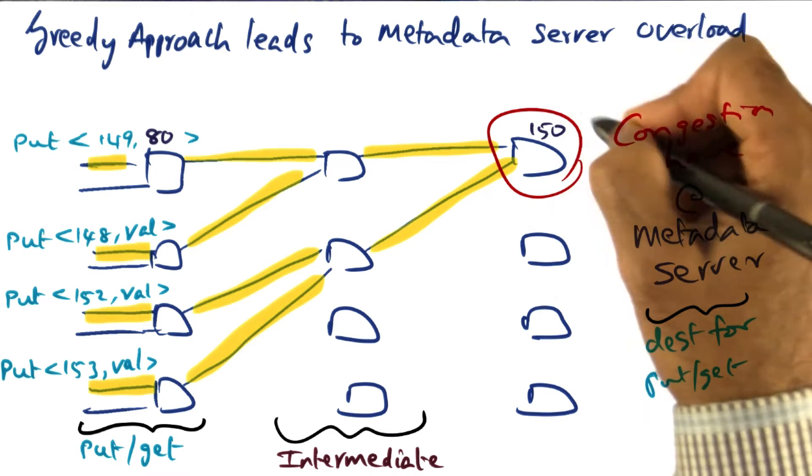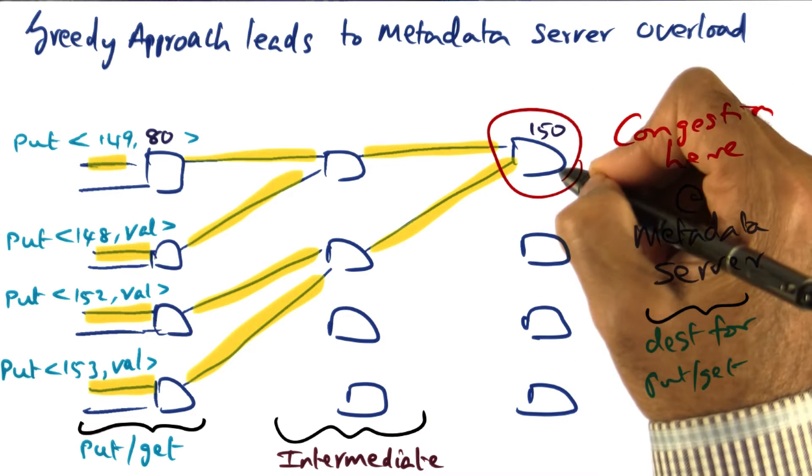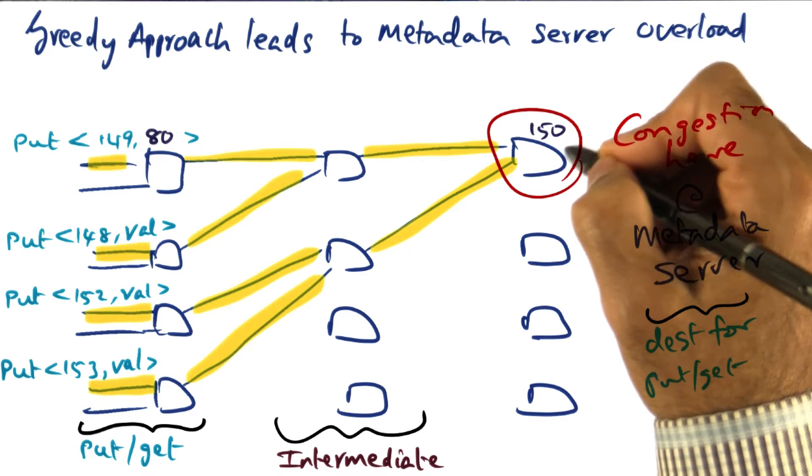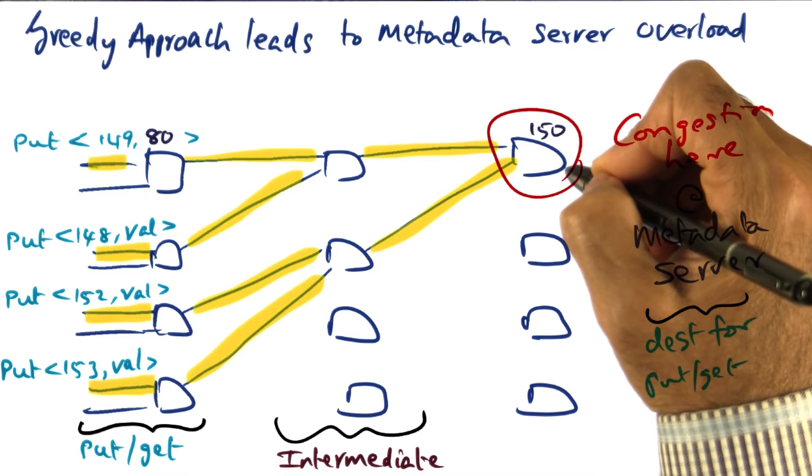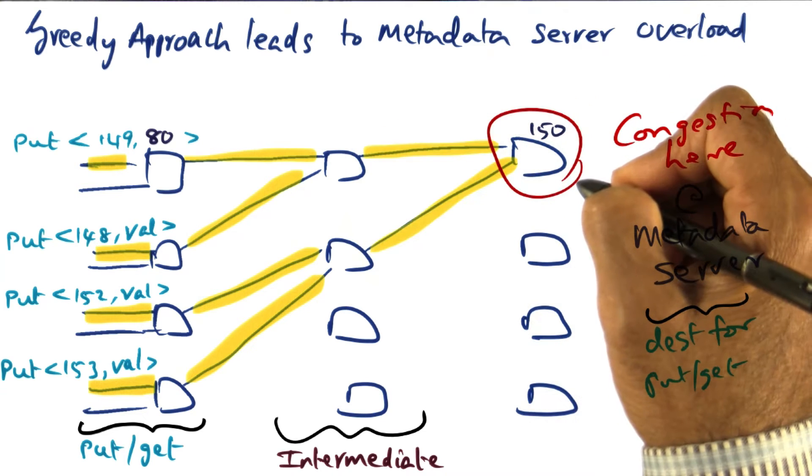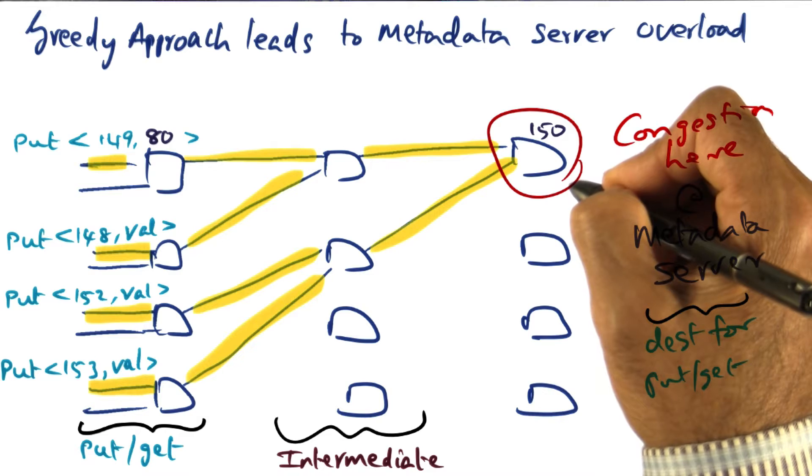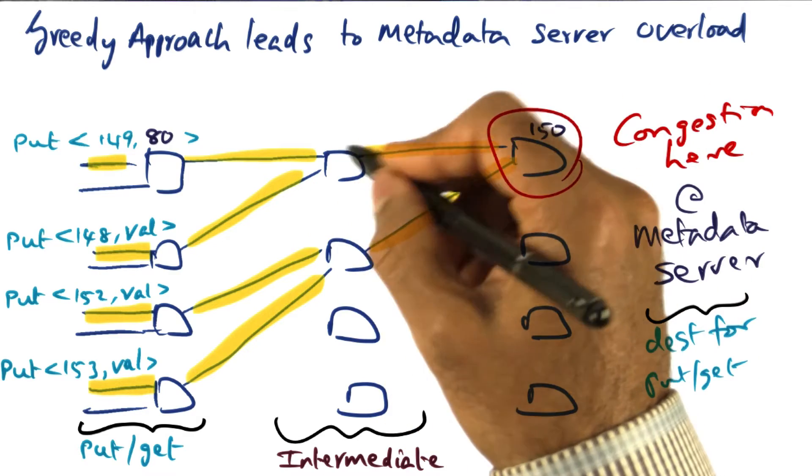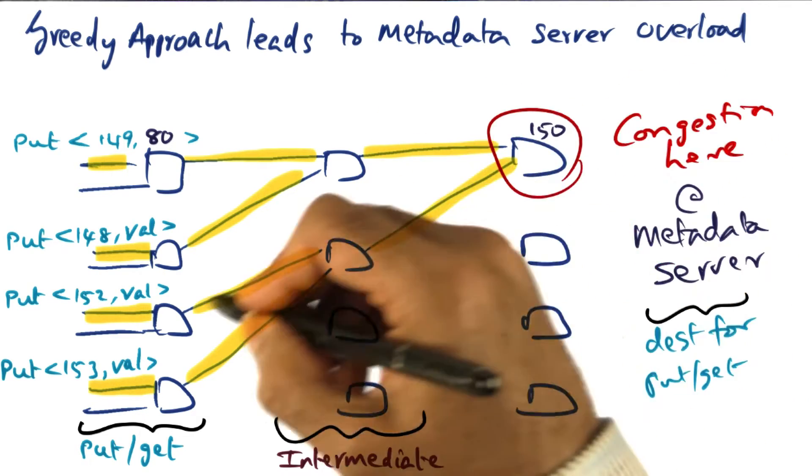So not only is this node going to find a lot of traffic if lots of keys map to its node ID, also the nodes that are adjacent to this node in the overlay network are going to be affected also.